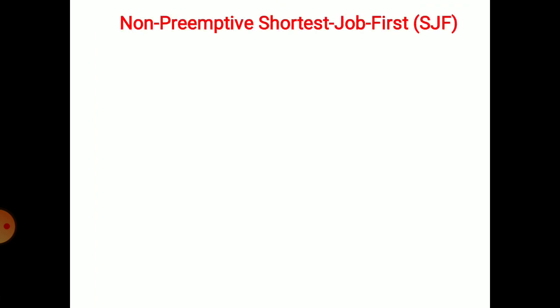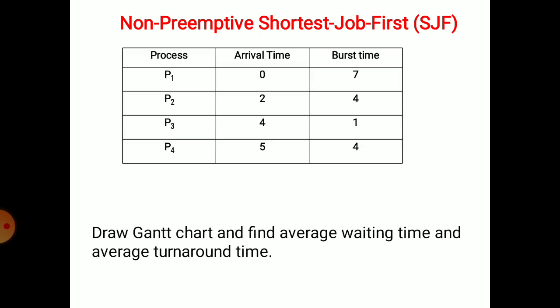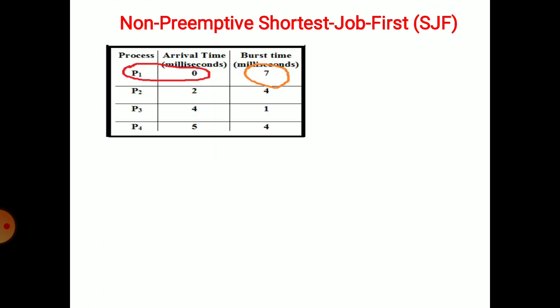Let us discuss one problem related to Shortest Job First. The processes are P1, P2, P3, and P4 with arrival times 0, 2, 4, and 5 respectively, and each process requests a different burst time. Draw the Gantt chart and find the average waiting time and average turnaround time.